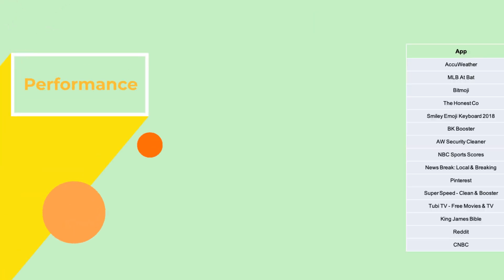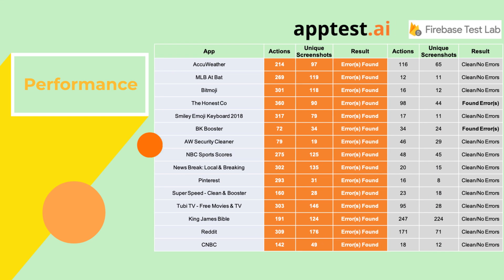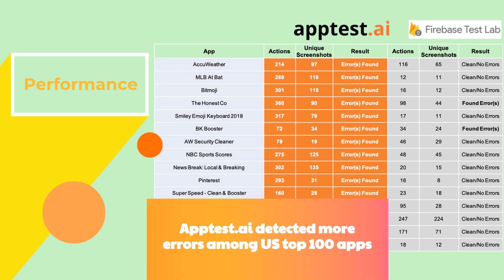Our performance is top-notch on both Android and iOS. Out of the top US 100 apps, AppTest.ai has discovered errors in 15 apps, whereas the alternative only found two. We're especially proud that we were able to tackle iOS, which is known to be challenging in the industry.